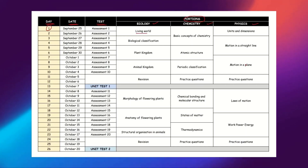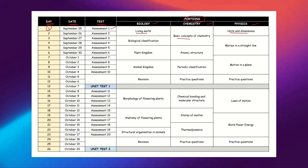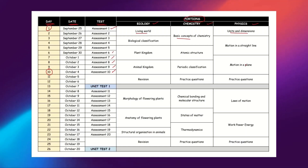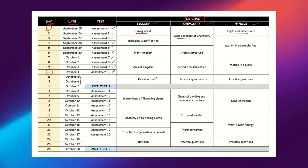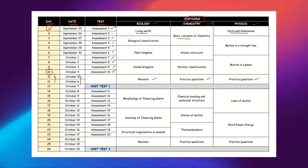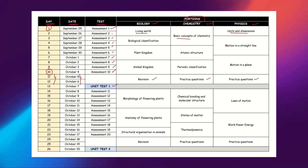On Day 1 you will start studying Living World in Biology, Basic Concepts of Chemistry, and Units and Dimensions in Physics, and you will write an assessment test on that day. You will write an assessment test every day for the respective chapters. By the end of Day 10 you must have completed all those chapters and written all 10 assessment tests. After that you get two days for revision, and only after those two days will you write Unit Test 1.